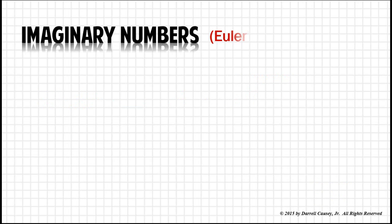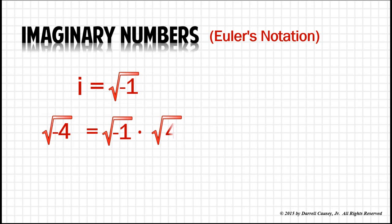Imaginary numbers. Using Euler's notation, we know that the imaginary number is defined as I equals the square root of negative 1. And that's a beautiful thing because it gives us a way to work with negative square roots.